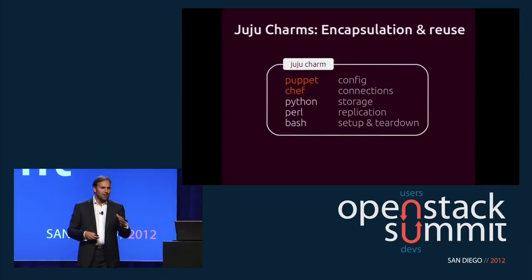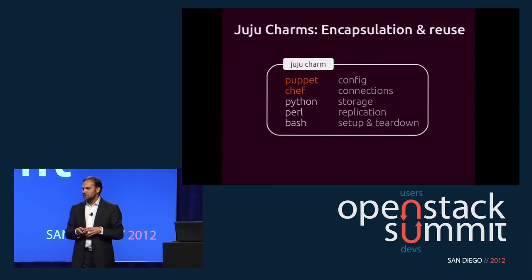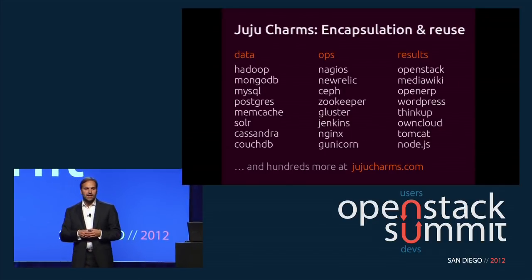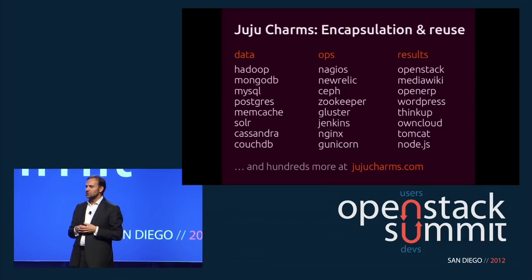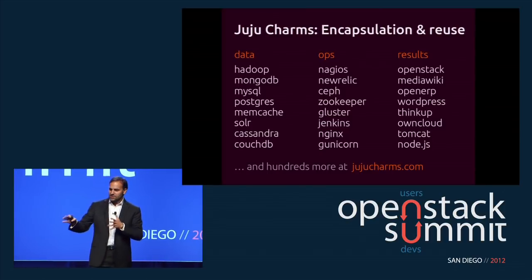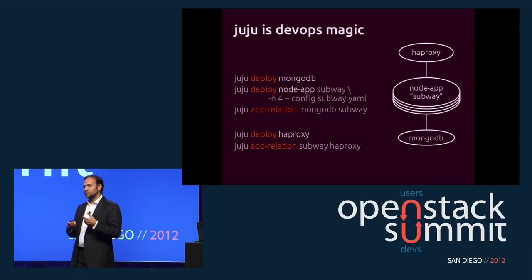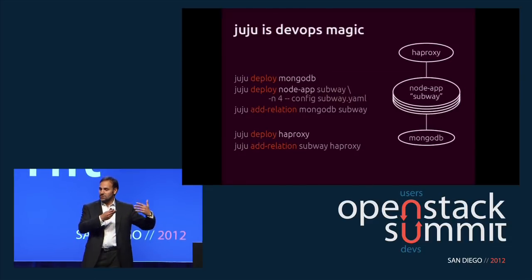Inside a charm can be anything you like — Puppet, Chef — there's no conflict between the service orchestration that Juju does and the config management those tools specialize in. Because this is all being accelerated in the Ubuntu community, there's already a long list of charms people can use off the shelf, letting you spin up with very little effort complex webs of services. We did this with OpenStack itself, so all the core components of OpenStack have been charmed. From a guest point of view, these are the sorts of things people want to spin up.